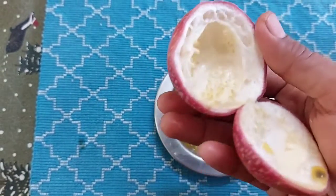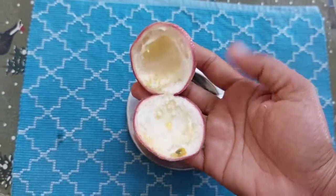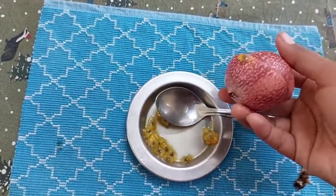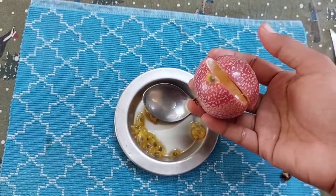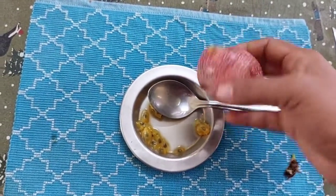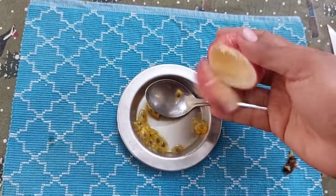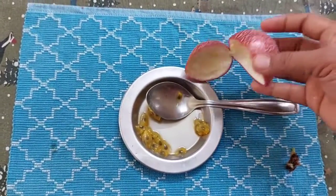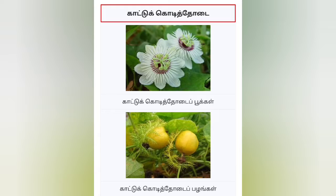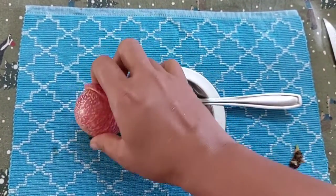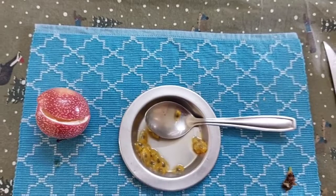This is a pulp. This is a place called Katt Kodithoed. I will see the photo of this Katt Kodithoed — this is a place where the Katt Kodithoed is. Let's talk about the same ingredients.